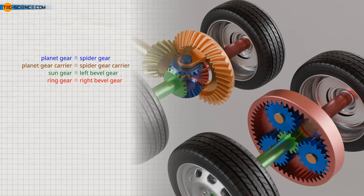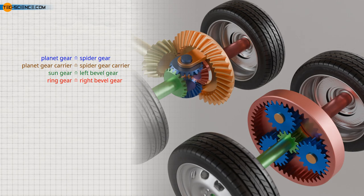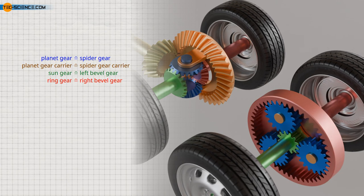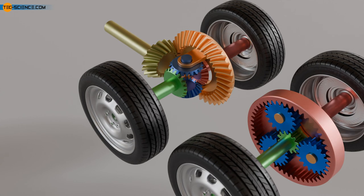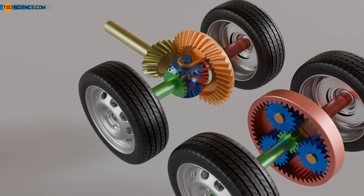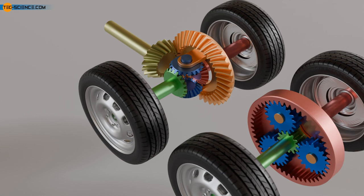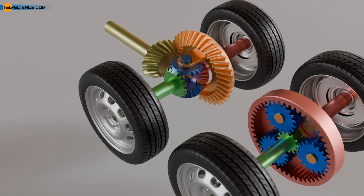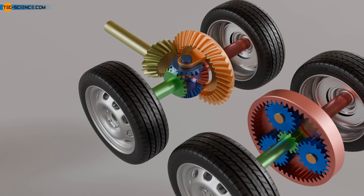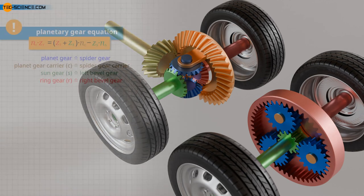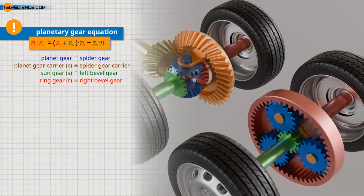The left bevel gear can be thought of as the sun gear, and the right bevel gear can be thought of as the ring gear of the planetary gear. If you lock the carrier firmly in both cases and turn one of the gears, the opposite gear will turn in the opposite direction — the kinematics of the two transmission types are also similar. For this reason, we can also use the fundamental equation of planetary gears, the so-called Willis equation, to mathematically describe the relationship between the different speeds as a function of the number of teeth of the gears.